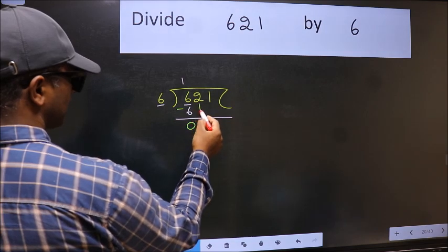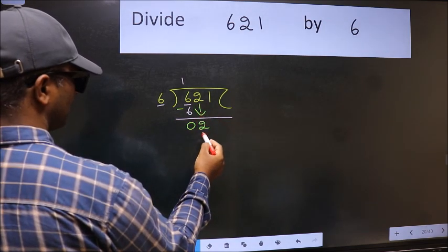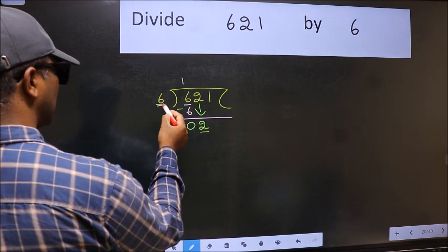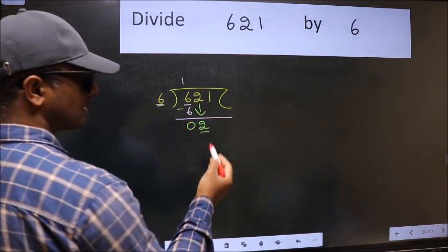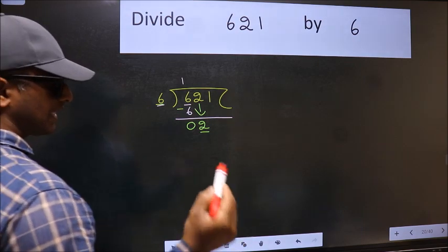After this, bring down the beside number, so 2 down. Now here we have 2 and here 6. 2 is smaller than 6, so we should bring down the second number.